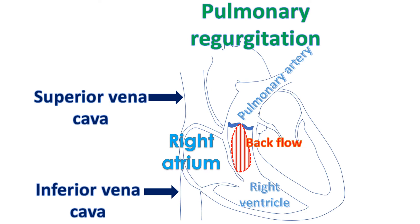A failing right ventricle can upset the heart rhythm and increase the risk of sudden cardiac death rarely. Failure of the right ventricle increases the pressure in the right upper chamber — the right atrium — from which the right ventricle receives blood. This increased pressure is transmitted to the great veins, the superior and inferior vena cava. Veins in the neck get distended, the liver gets congested and enlarged, and fluid collects under the skin of the legs and in the tummy in severe long-standing cases.